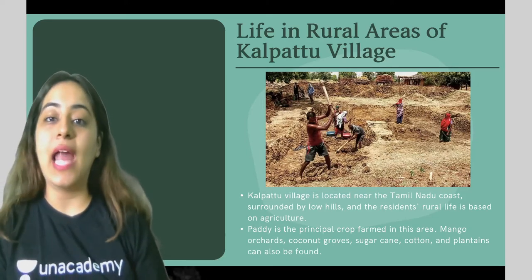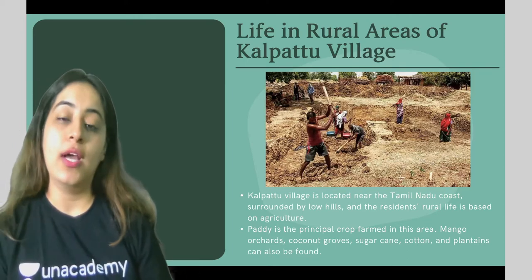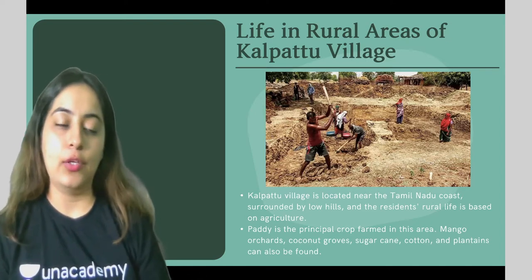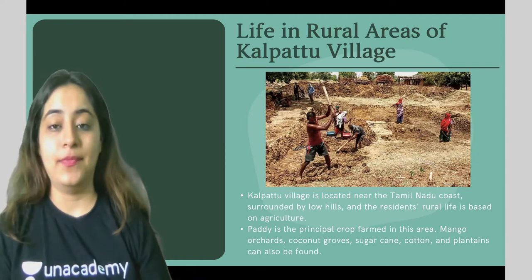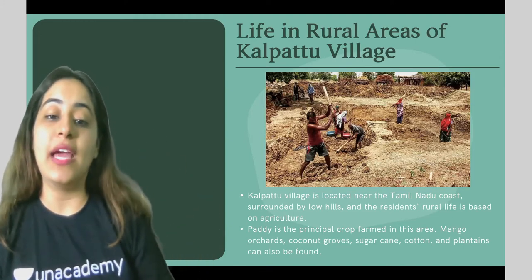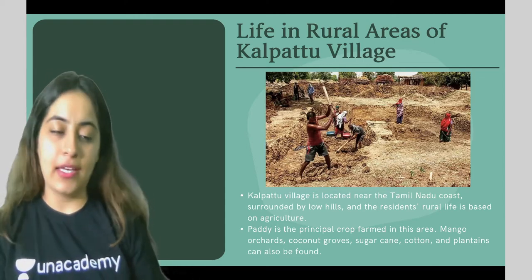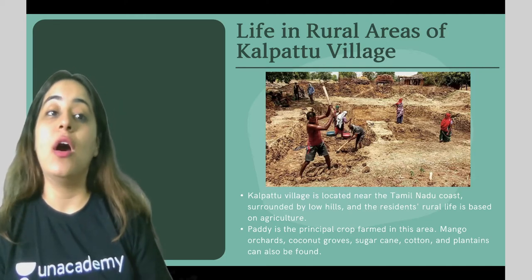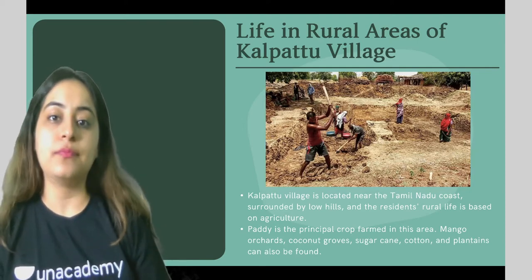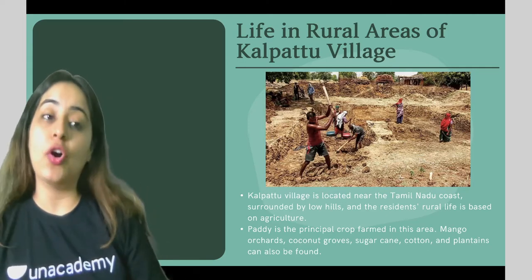We are starting with life in rural areas of the Kalpatu village. Kalpatu village is located near the Tamil Nadu coast, surrounded by low hills. The residents' rural life is based on agriculture — most people who live in this village earn their daily income from agriculture, which makes it a predominantly agricultural rural community.